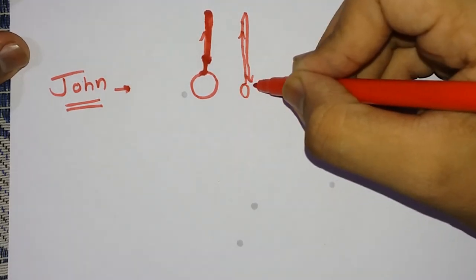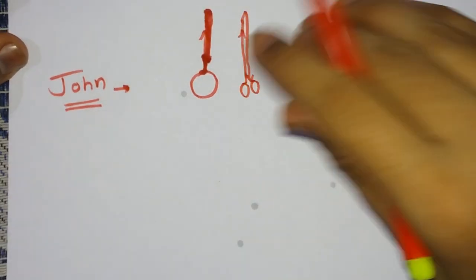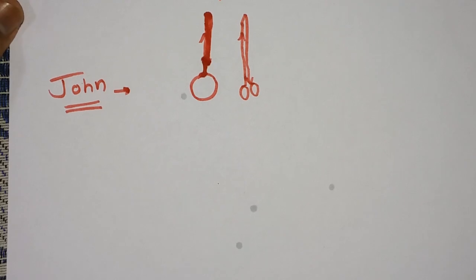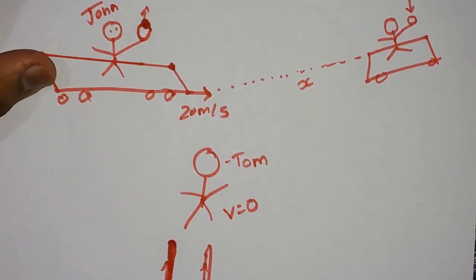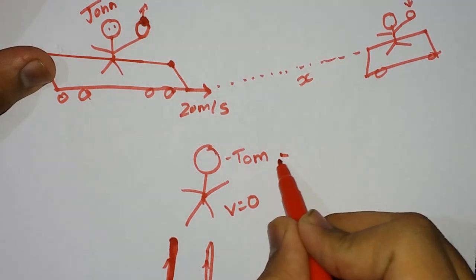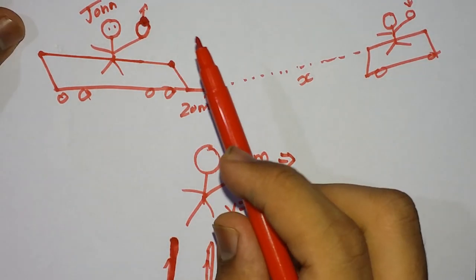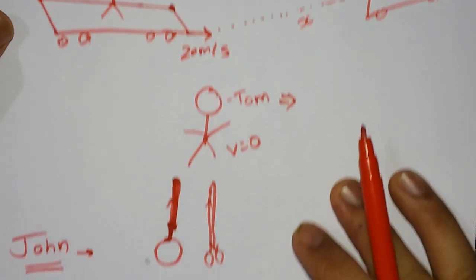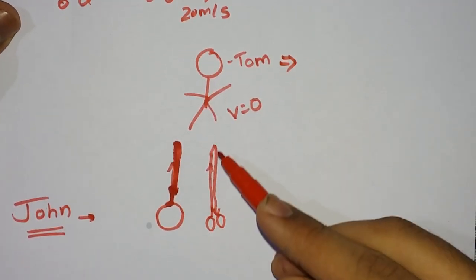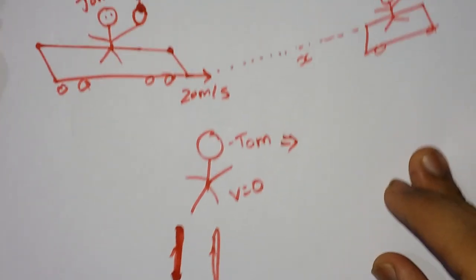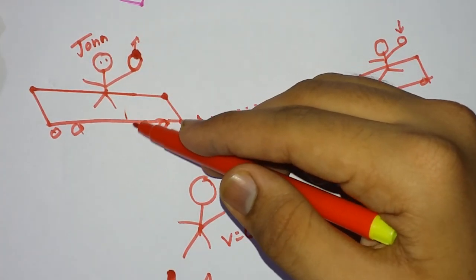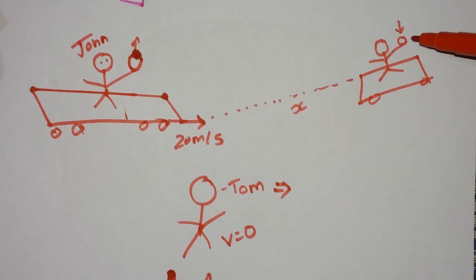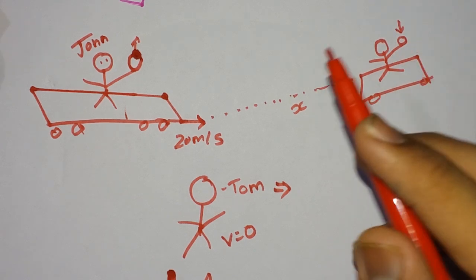But the main question is: what does Tom see? Tom is actually at rest. Tom knows that this cart has a velocity of 20 meters per second. So let me draw what Tom sees. If Tom saw the same thing - the ball simply going up and down in one dimension - then the ball would go up and fall down right here. But we know the reality: John got the ball back at some distance X.